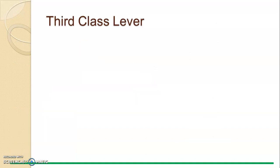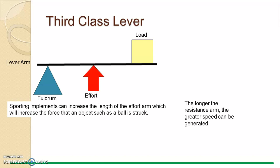Now for the third class lever — E is third in FLE. The effort is in the middle, the load is at the end, and the fulcrum is at the other end. Compared to the second class lever, the load and effort have swapped. Sporting implements can increase the length of the effort arm to increase force on an object. For example, Federer's tennis racket increases the length of the lever.